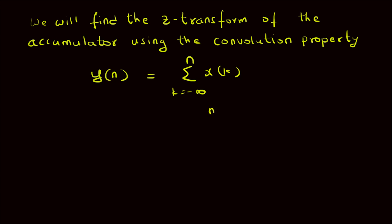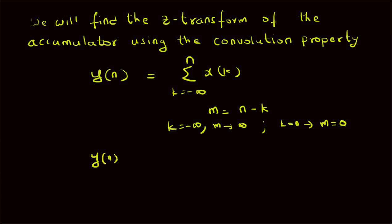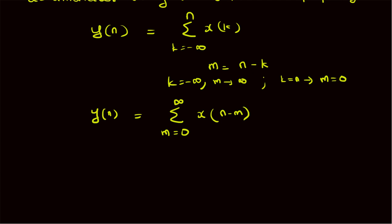We define a new variable m = n - k. So for k = -infinity, m becomes infinity, and for k = n, m becomes 0. So the sum y(n) can be rewritten as summation m = 0 to infinity of x(n - m). This summation can be seen as a summation of a causal signal.